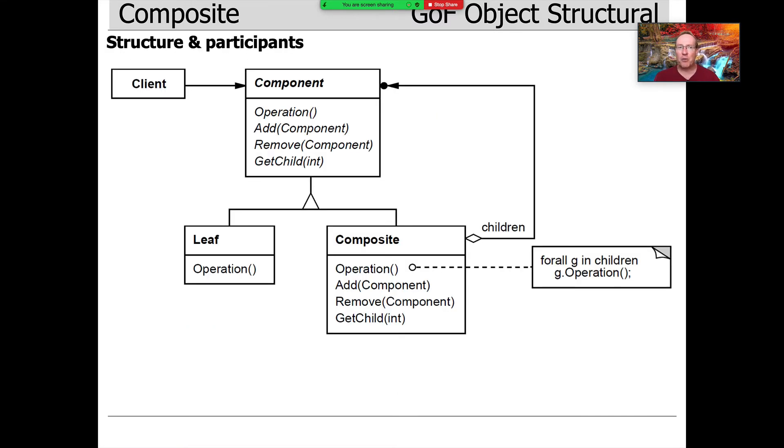So this is what the diagram looks like. If you look at the Gang of Four book, you'll see this diagram. You can see there's this abstract class or interface called component, and it defines a bunch of abstract operations. You can tell something's an abstract class and an abstract operation or method when it's put in italics.